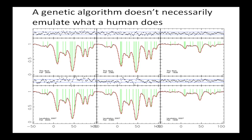It's interesting that a genetic algorithm doesn't necessarily emulate what a human does. In the bottom panel the same data was fitted by a colleague — not someone in our team — and you can see the green lines showing where all the components were positioned. The normalized residuals are reasonable but not great. At the top, using this algorithm, you can see that the structure is quite different in some cases and the normalized residuals are very good. So this potentially is an enormous time saver and could make the whole process far more objective.